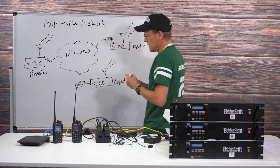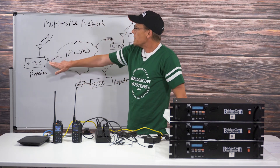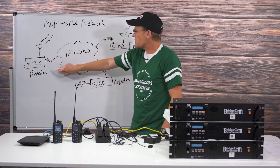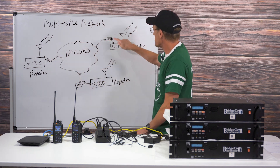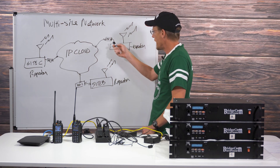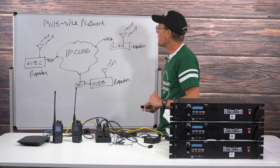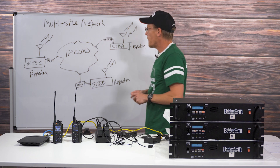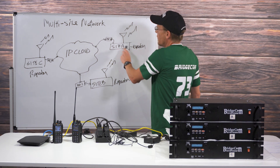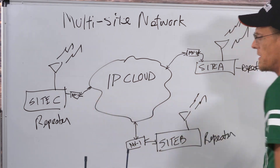Inside the MV1, one of these three units will function as a server. I'll make Site A the server. Inside the MV1's web-based interface, you can set up a talk map so that if a call comes in on Site A, it raises Site B and Site C.